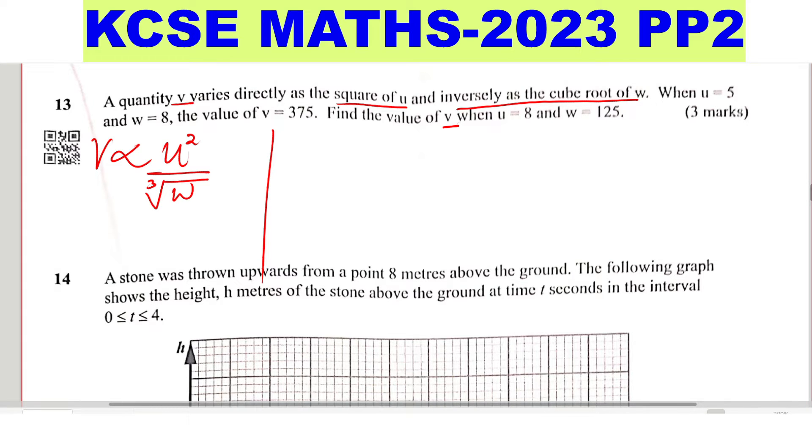That is how I write the variation. When you remove the sign of proportionality because you introduce a constant, V equals the constant K, then U squared, divided by the cube root of W.